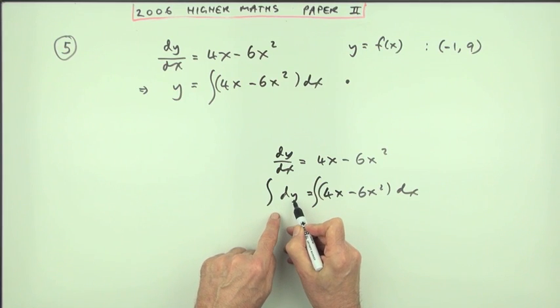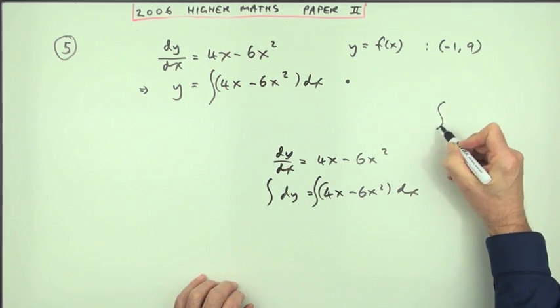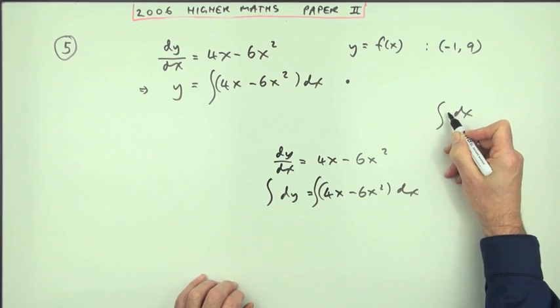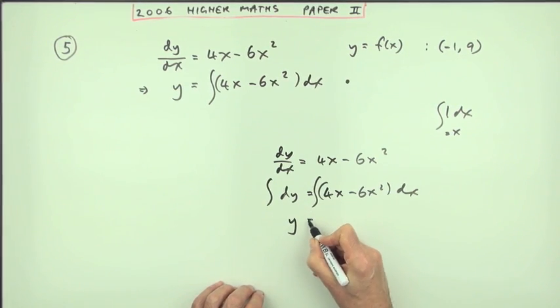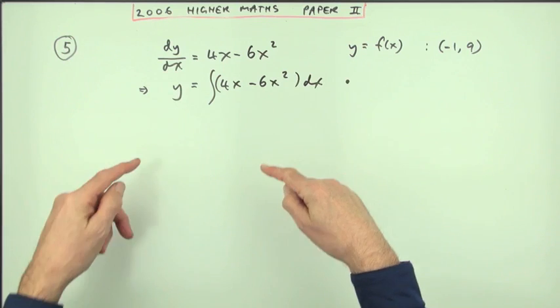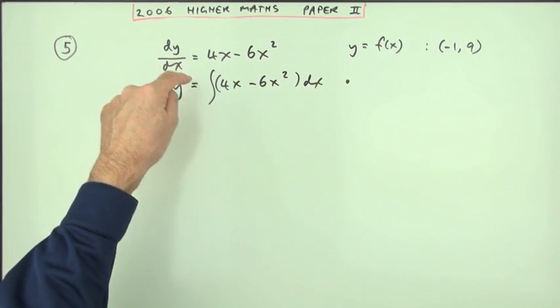Now the integral of dy, just like the integral of dx, which you consider like a 1dx gives you an x, the integral of dy goes back to y, and then that's just the standard form for integrating this expression. Still, you don't need to know that. You just think, how do I go back again? Do the opposite, integrate.